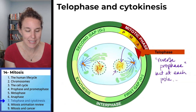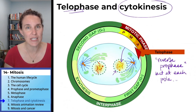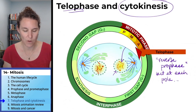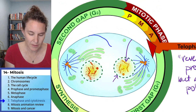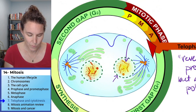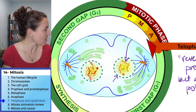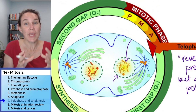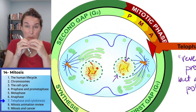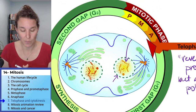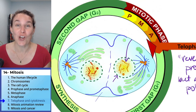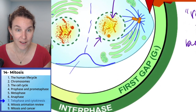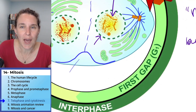Telophase and cytokinesis — this picture doesn't show cytokinesis very well, so I'm going to draw it in. What starts to happen is that the cell membrane begins to pinch in. As it pinches in, it's ultimately going to pinch off, and you're going to end up with two complete cells that go into the gap phase.